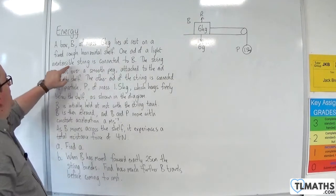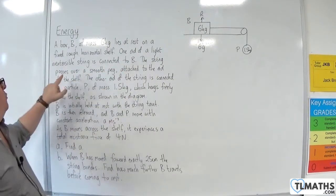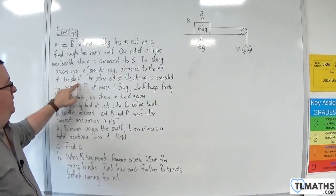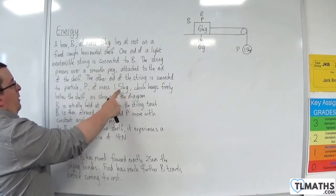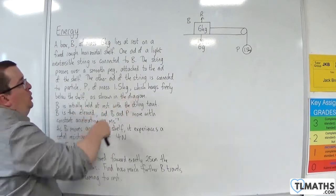One end of a light, inextensible string is connected to B. The string passes over a smooth peg attached to the end of the shelf. The other end of the string is connected to particle P of mass 1.5 kilos, which hangs freely below the shelf, as shown in the diagram.